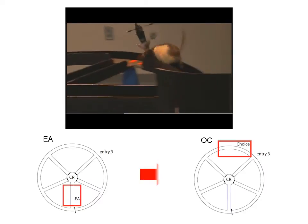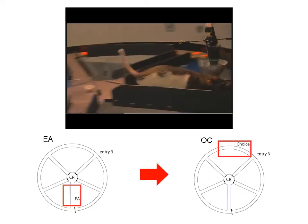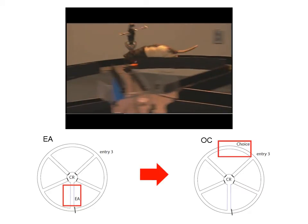When we analyzed LFP and spikes from cingulate and hippocampus, we realized that as rats move from a preparatory stage at the onset of each trial to an executive stage where choices are made, the accuracy with which neurons identify the trajectory being run, their coding accuracy, increases first in hippocampus,